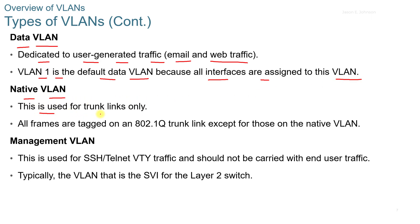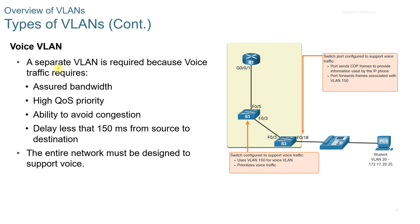The native VLAN is used for trunk links only. All frames are tagged on an 802.1Q trunk link except for those on the native VLAN. The management VLAN is used for SSH, Telnet, and VTY traffic and should not be carried with other end-user traffic — typically the SVI for the layer 2 switch. A voice VLAN requires a separate VLAN because voice traffic requires assured bandwidth, high QoS priority, ability to avoid congestion, a delay of less than 150 milliseconds from source to destination, and the entire network must be designed to support voice.